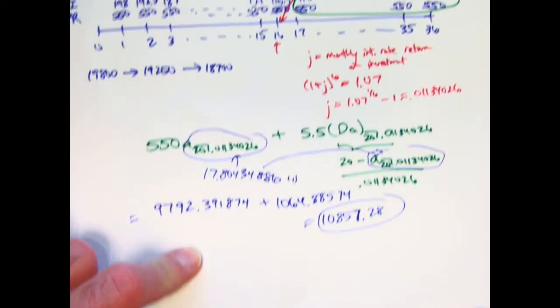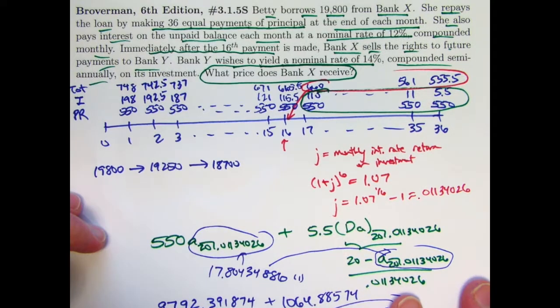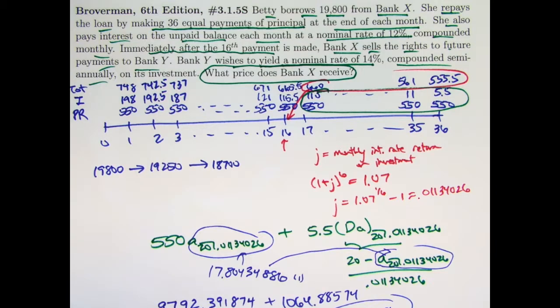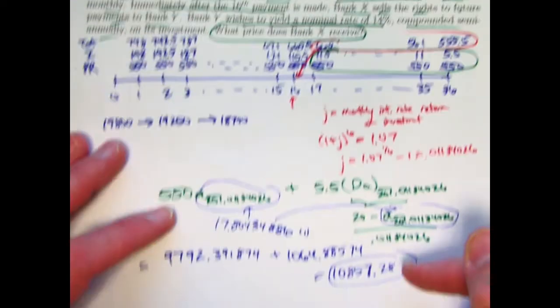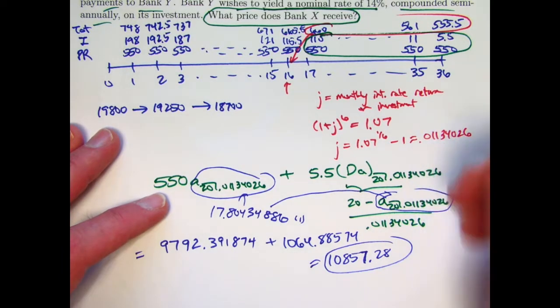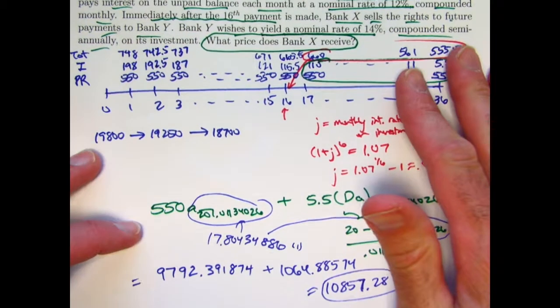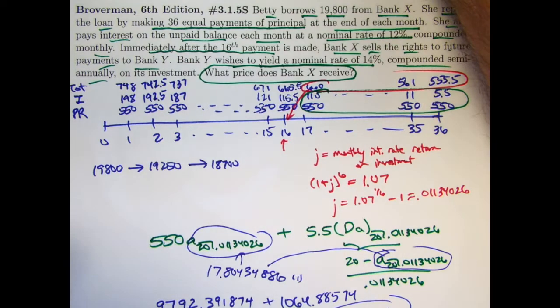So that is what Bank Y should pay Bank X right after that 16th payment that Betty makes in order for them to get this kind of return on their investment. Now, of course, Bank X has to agree to that, and to them, the outstanding balance is more than they're getting paid. The outstanding balance, I believe, is $11,000 at this point. So in a sense, they're losing a little money, but they might decide to do that because maybe they need the cash. This would be a way that Bank X could raise some cash. And they might not just do it with Betty's, they might do it with other people's too.